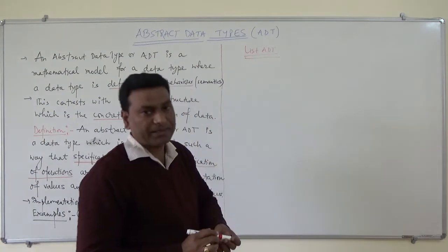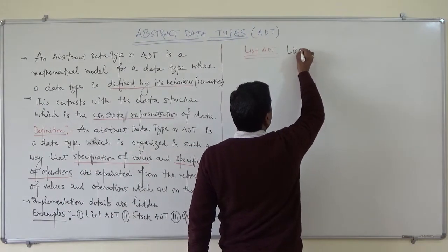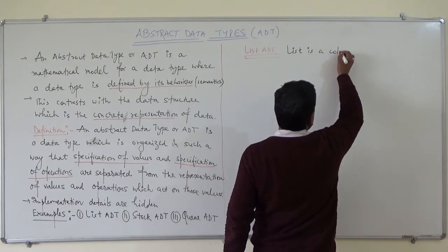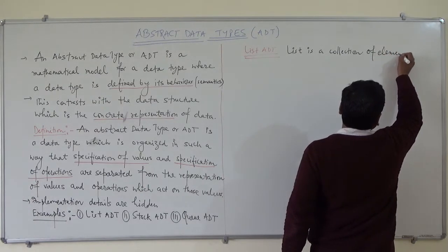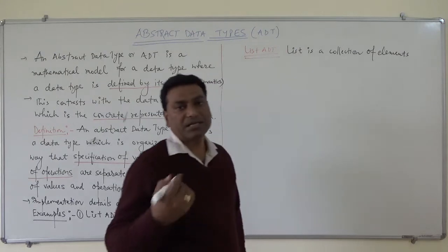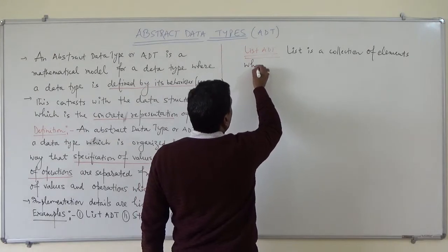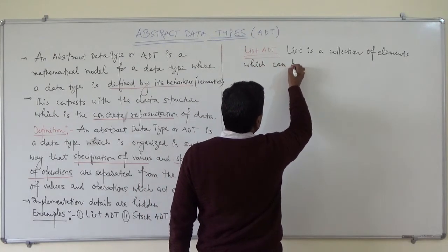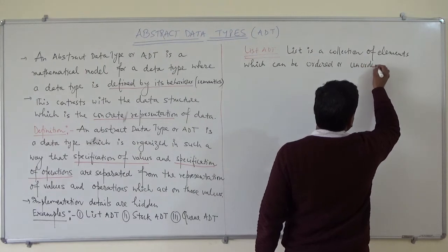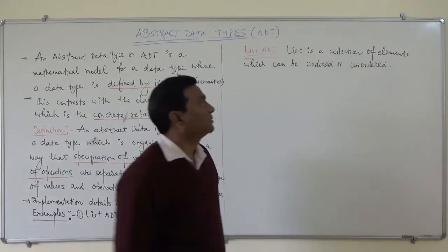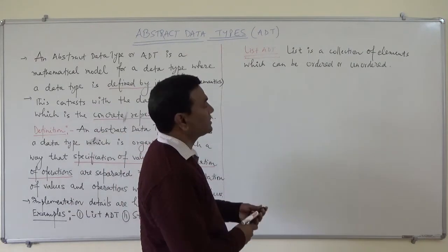Now we will consider list ADT. We know that a list is nothing but a collection of elements. A list is a collection of elements which can be ordered or unordered.